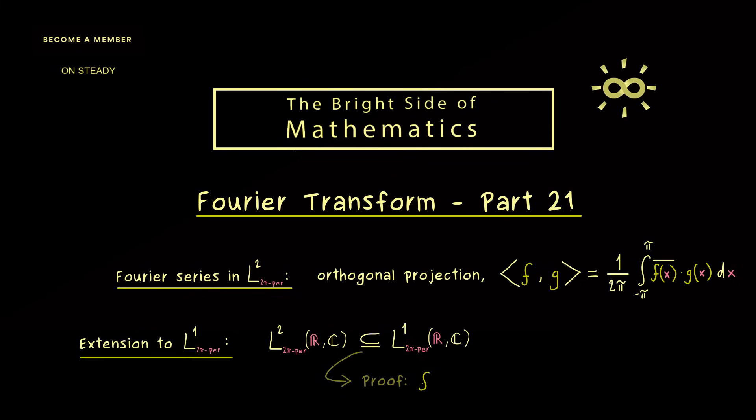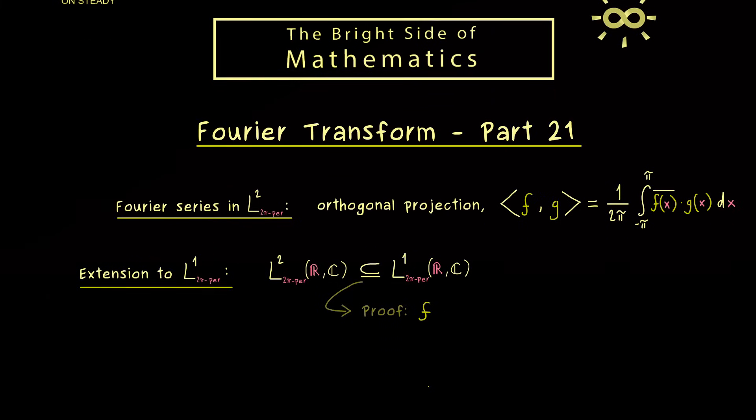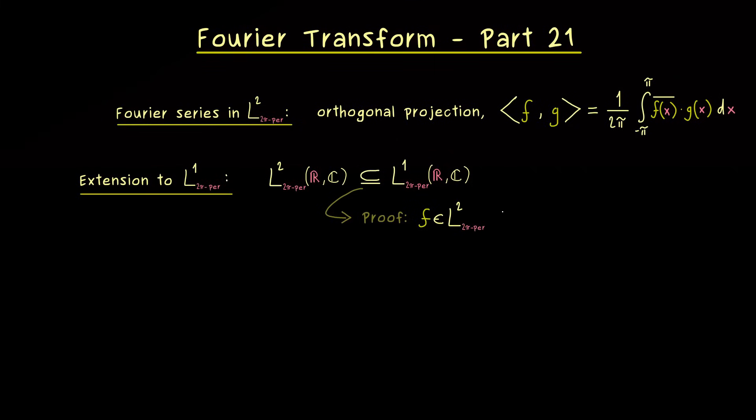So what we need to show is that a function from L2 also lies in L1. First we can take the fact that f is square integrable which means we can use our inner product. Moreover for the second input in the inner product we can use a constant function. So this denotes the function that is 1 everywhere so it's definitely also square integrable over the interval from minus π to π. And now in the next step we can also put in some absolute values which means instead of f we consider the absolute value of f.